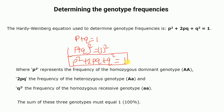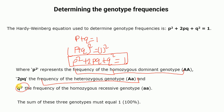In this equation, p squared represents the frequency of the homozygous dominant genotype (AA). The term 2pq represents the frequency of the heterozygous genotype (Aa). And q squared represents the frequency of the homozygous recessive genotype (aa). The sum of the frequencies of all three genotypes must always equal one or 100 percent. This Hardy-Weinberg equation is used to determine genotype frequency.